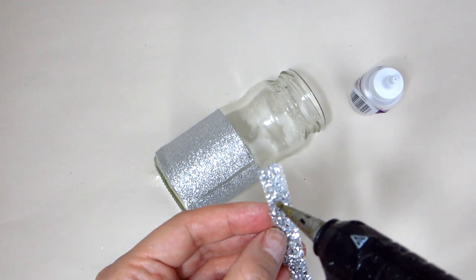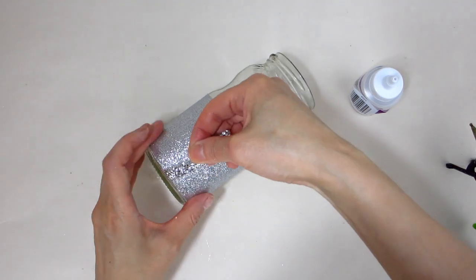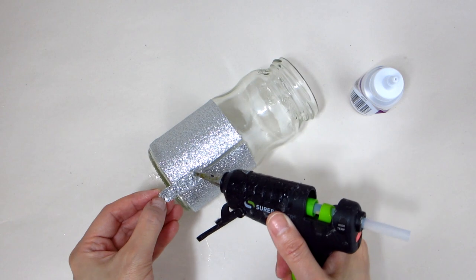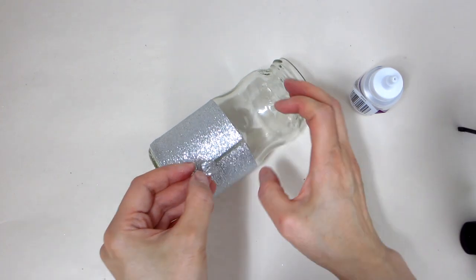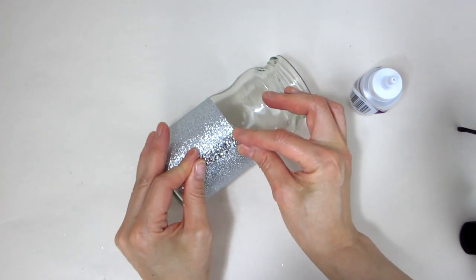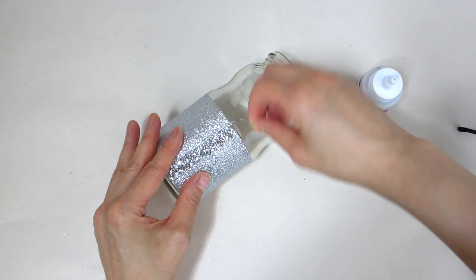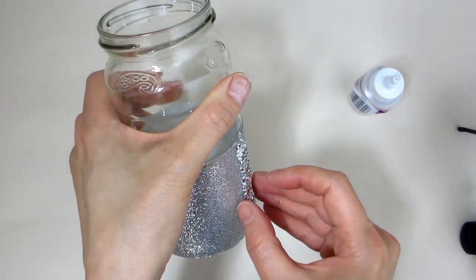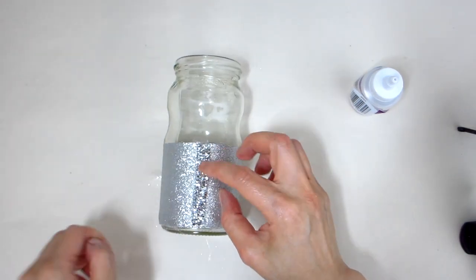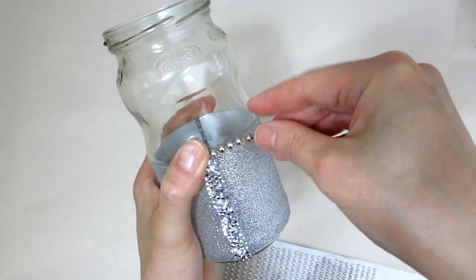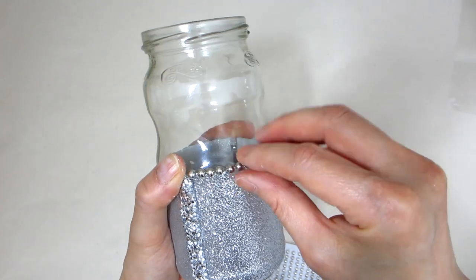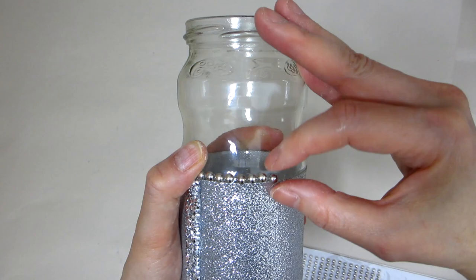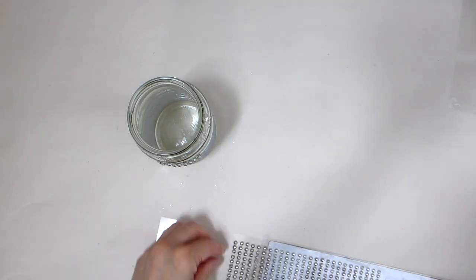Using some hot glue, adhere a short strip of rhinestone ribbon vertically on the silver glitter fabric, one strip on the opposite side of each other. Then, repeat by applying a string of silver beaded necklace along the bottom edge of the jar where the glitter fabric ends, as well as towards the top edge of the glitter fabric.